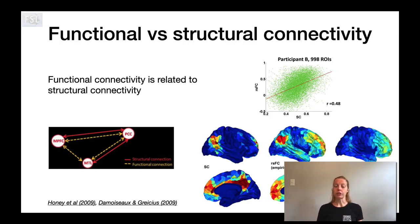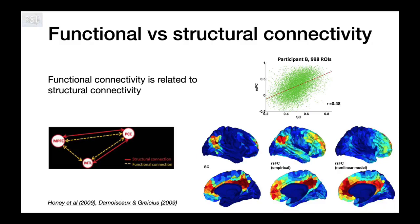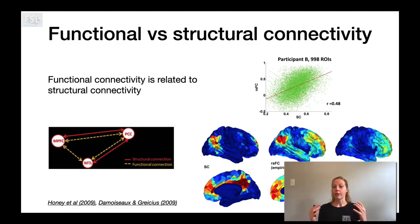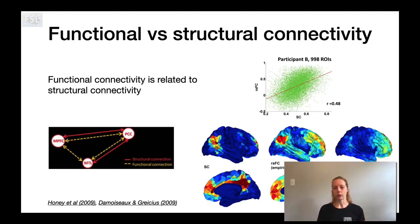Another important factor is the relationship between functional and structural connectivity. There have been a number of studies comparing diffusion weighted tractography results with resting state fMRI results, and there is a relatively good relationship between these. Although it is possible to find functional connectivity when there's no direct structural white matter pathway between two regions — that's when you can have indirect pathways. For example, region one might be connected to region three through another region, which explains some of the differences between functional and structural connectivity.